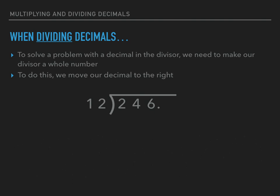Now we can solve this like a regular long division problem. Twelve cannot fit into two, so we move to the next place value. Twelve fits into twenty-four two times, because twelve times two equals twenty-four. Subtract to get zero, then bring down the six. Twelve cannot go into six zero times, so twelve times zero equals zero, leaving six remaining. At this point the decimal is still at the end of the dividend — I can assume there is a zero there, since any whole number has an infinite amount of zeros after the decimal point. I bring that zero down to continue.